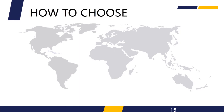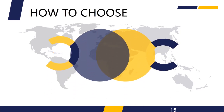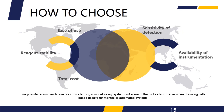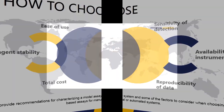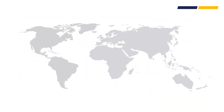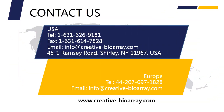Choosing a cell proliferation assay from the many different options available can be a challenging task. Picking the best assay format to suit particular needs requires an understanding of what each assay is measuring as an endpoint, how the measurement correlates with cell proliferation, and what the limitations of the assay chemistries are. Here we provide recommendations for characterizing a model assay system and some of the factors to consider when choosing cell-based assays for manual or automated systems. If you have any questions, please contact us.